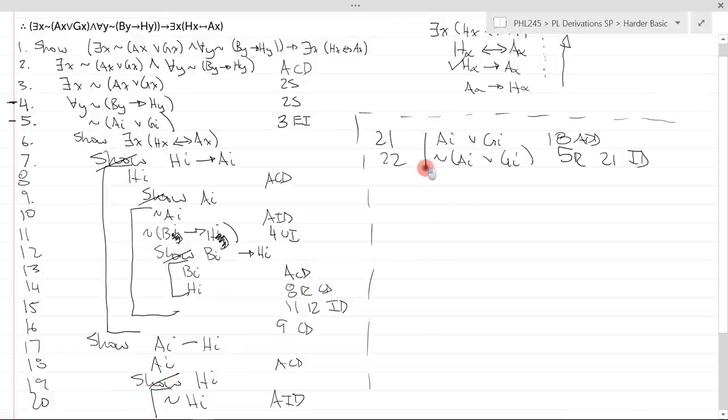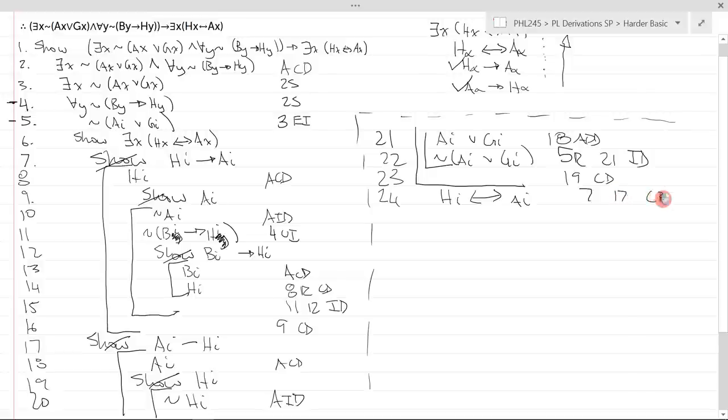Now I know if you're paying attention, you'll realize I have a lot of useless extra show lines and stuff like that, but I really don't care. It doesn't actually lengthen the time of my proof much at all, and it just makes me sort of happy to do these things. So 19 conditional derivation. I have now done this. Why did I want these two? So I could combine them. So now I can get H I bi-conditional AI, and that is line 7, 17, conditional to bi-conditional. Why did I want this? Because now I can move up and get the existential, and the existential is right here.